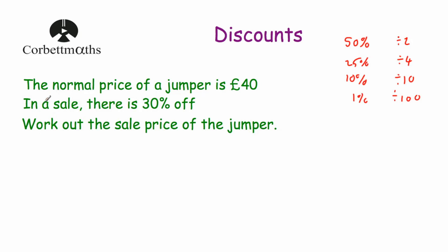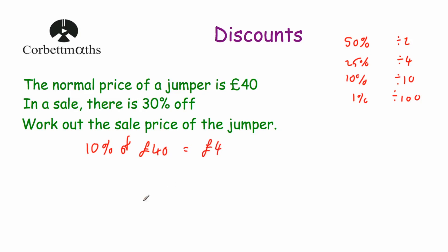The normal price of the jumper is £40 and we want to work out 30% of £40 to find the discount, then take it off to see what you'll be left with. So let's work out 30% of £40. First let's get 10% — to get 10% of £40 we divide by 10. 40 divided by 10 is £4, so 10% is £4.